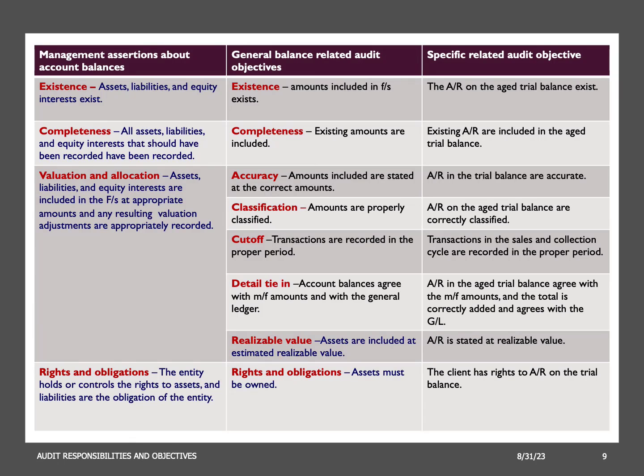Management assertions about account balances address the balance sheet. The existence assertion is a management assertion that focuses on the presence of assets, liabilities, and equity items listed in the financial statements. It asserts that the reported items actually exist, both physically and in terms of ownership or obligation. The auditor's objective is to gather sufficient and appropriate audit evidence confirming the physical existence of assets, the validity of liabilities, and the associated ownership rights or obligations. For example, the existence assertion for revenue-related balance sheet accounts such as accounts receivable and deferred revenue involves confirming that reported balances correspond to actual existing assets and liabilities.